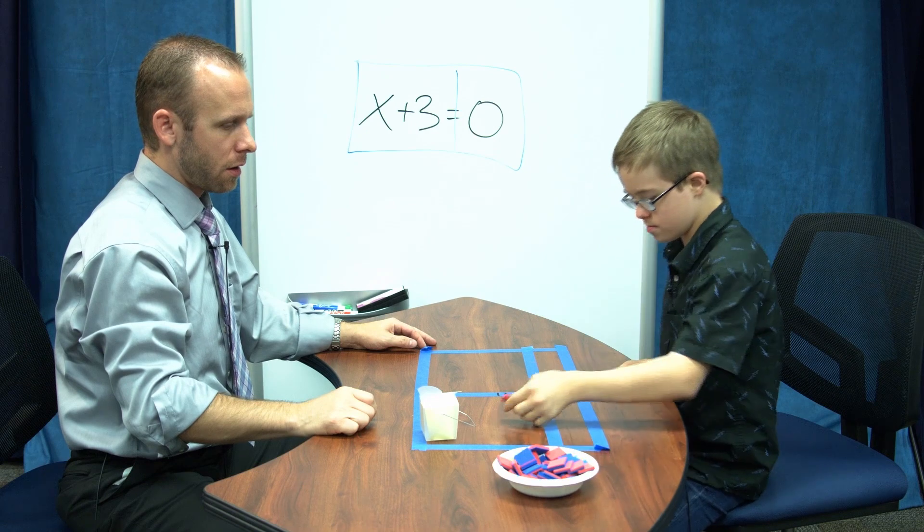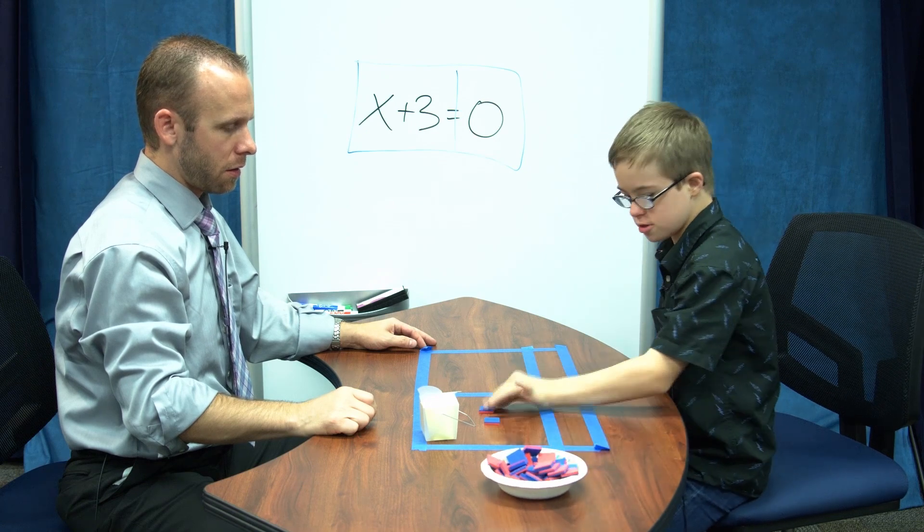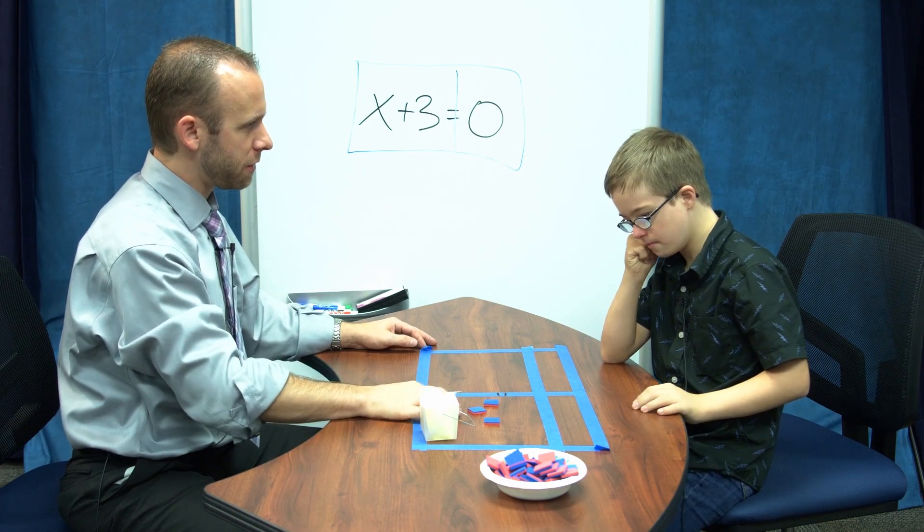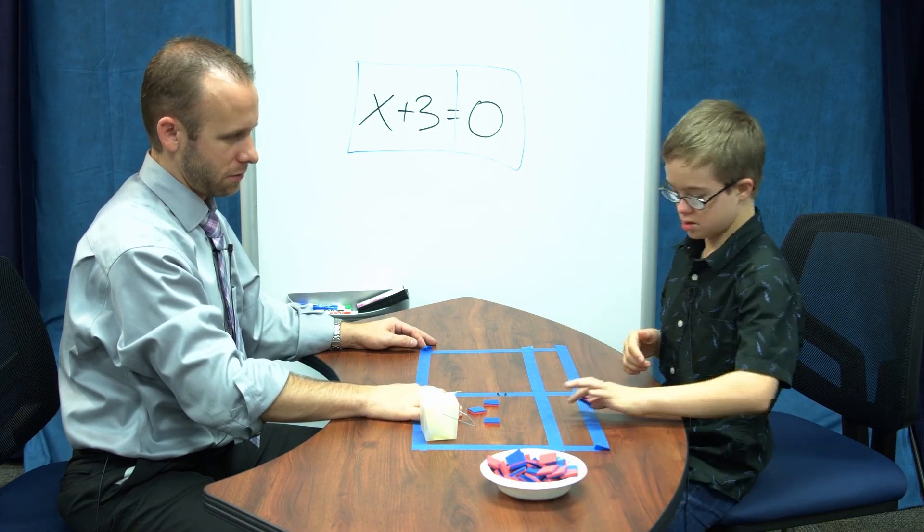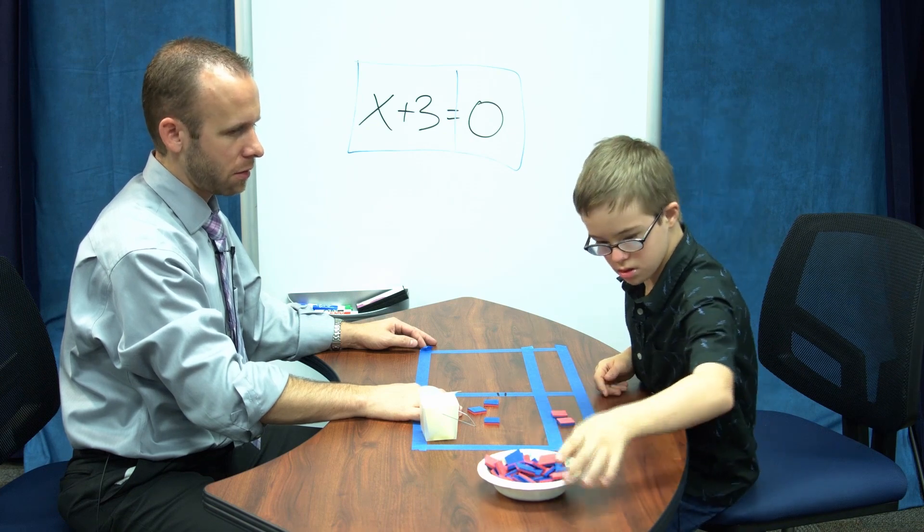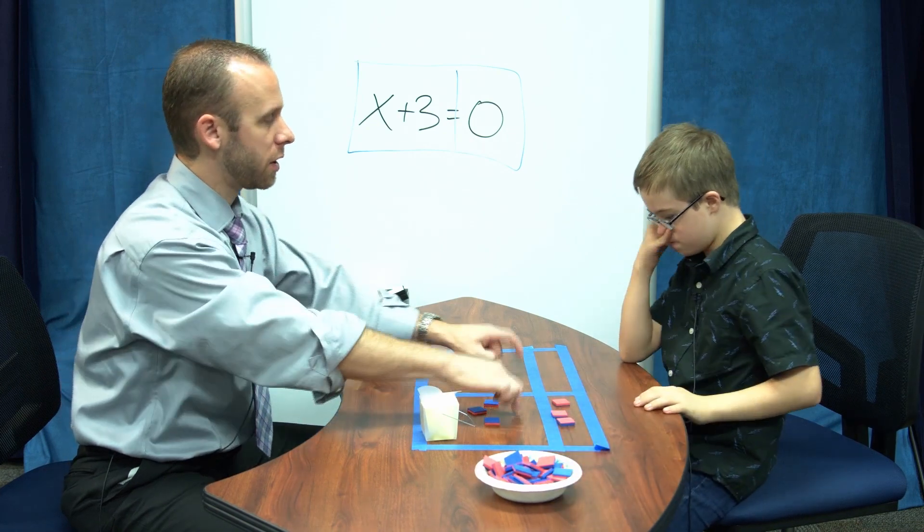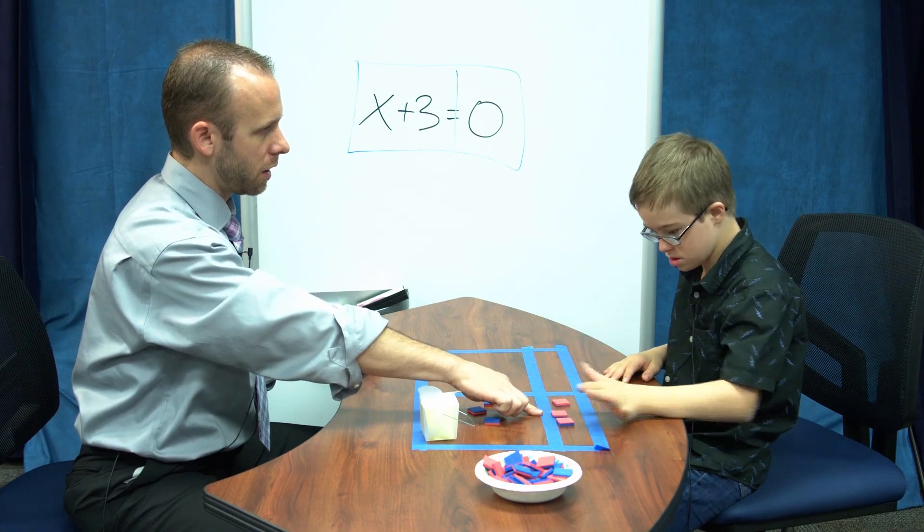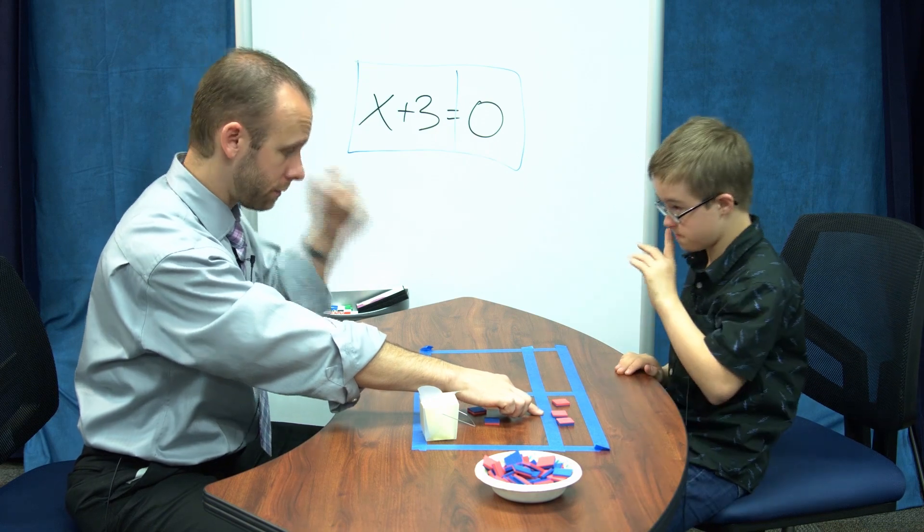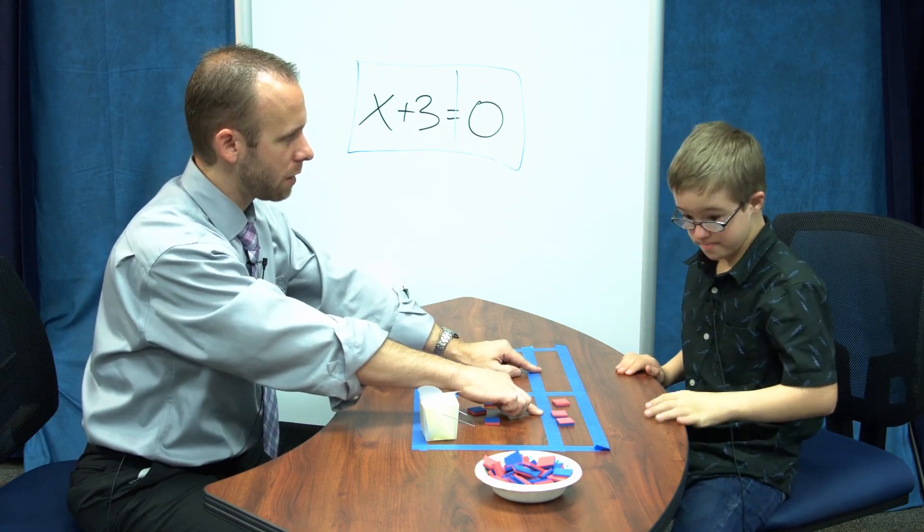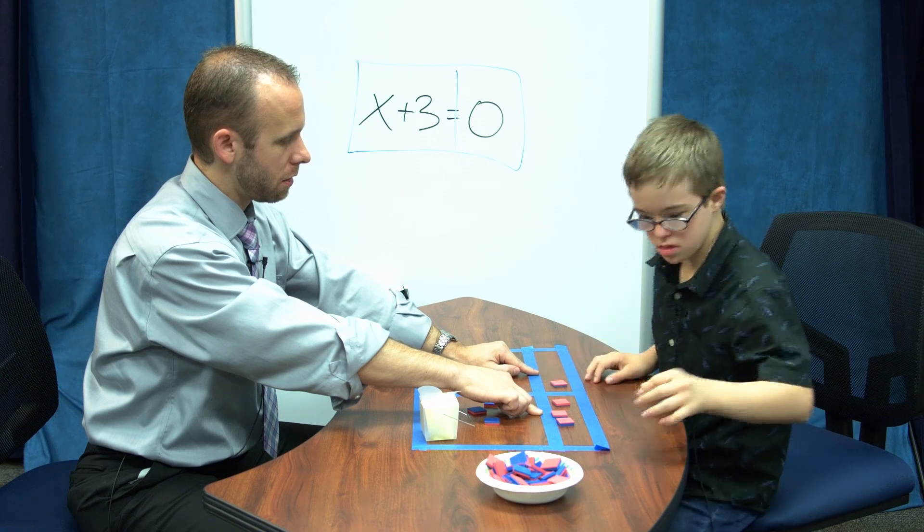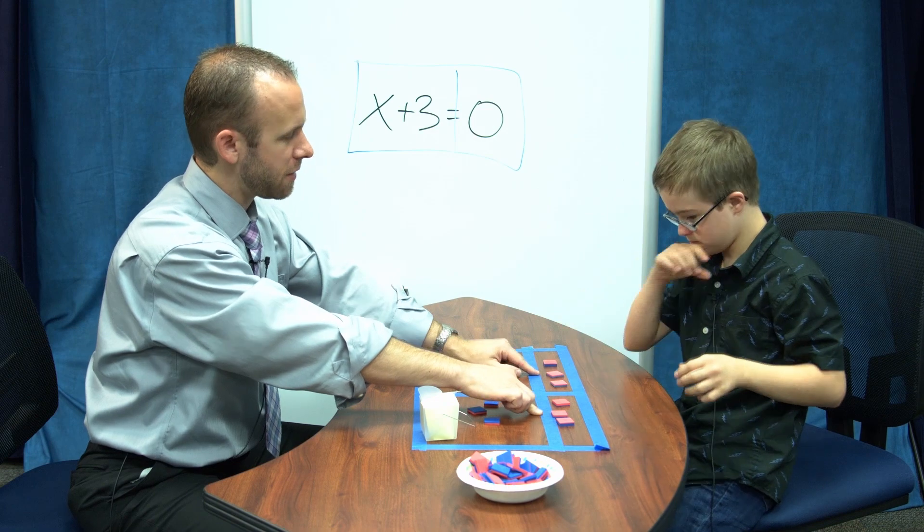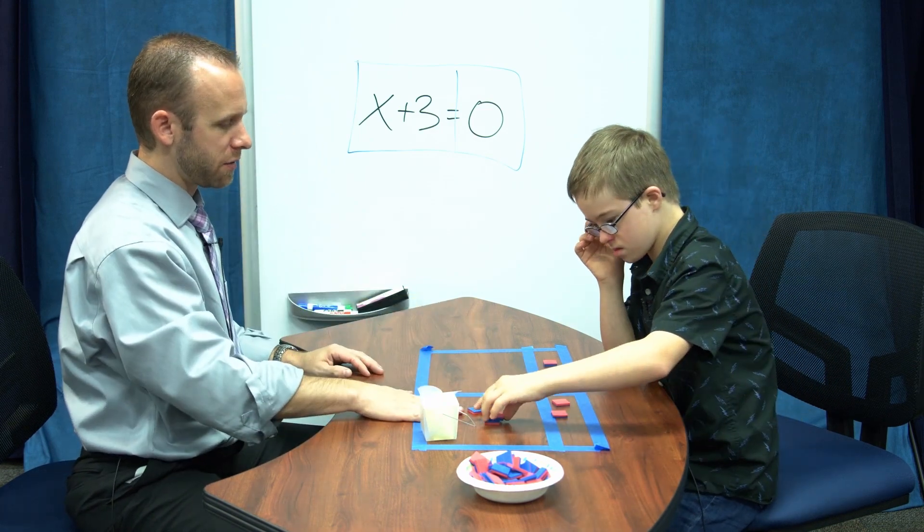One, two, three. So what's the opposite of positive three? Negative three. And how do we keep our equation equal? What'd you put here? Negative three. So what goes over here?